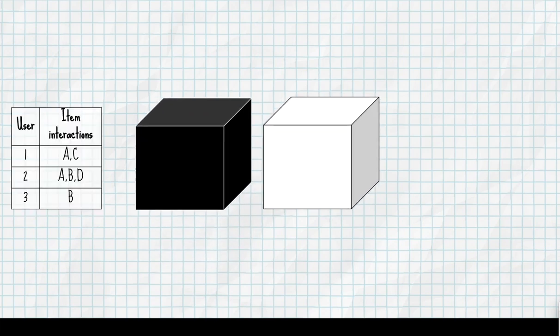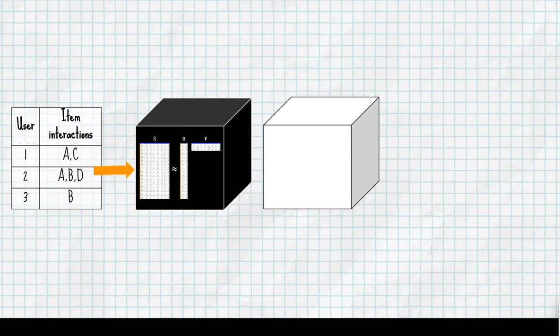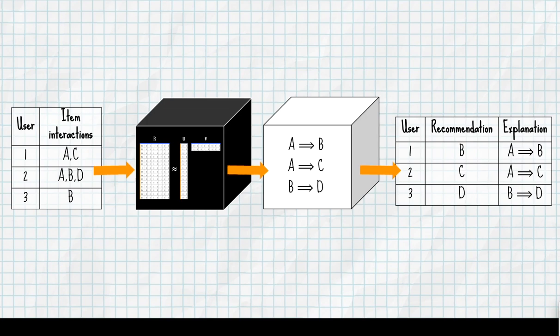We take data on TV programmes users have watched and input this to a black box latent factor model. The black box outputs predictions for programmes users might like. We then use these predictions as input into a white box model called association rules. The association rules attempt to reproduce the recommendations as well as an explanation for its decision which we can then return to the user to increase their interpretability of the model without having to sacrifice any accuracy.